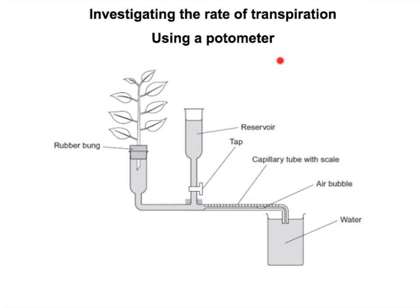This is a potometer, which is a quantitative technique used to investigate the rate of transpiration. You can look at different factors and how they affect it — attaching a fan to simulate wind, using lamps to increase light intensity, or making the room warmer or colder. The plant has a continuous column of water running through its xylem, through the capillary tube to the bubble, so any water lost from the plant is represented by the bubble moving along the capillary tube.